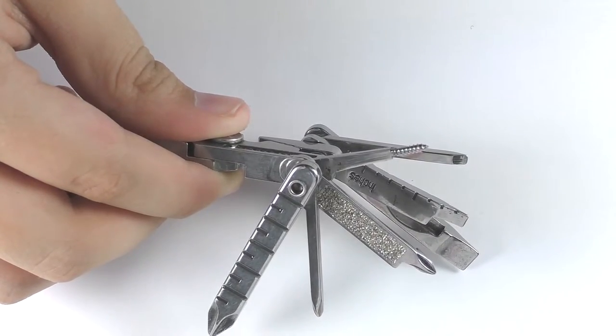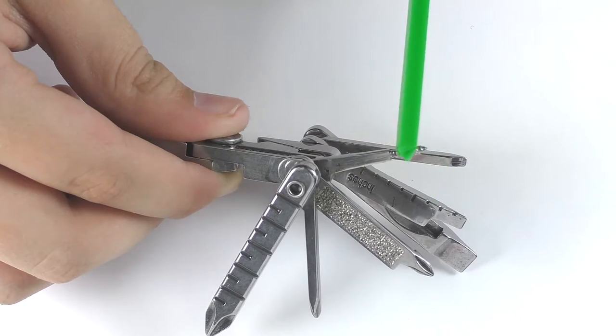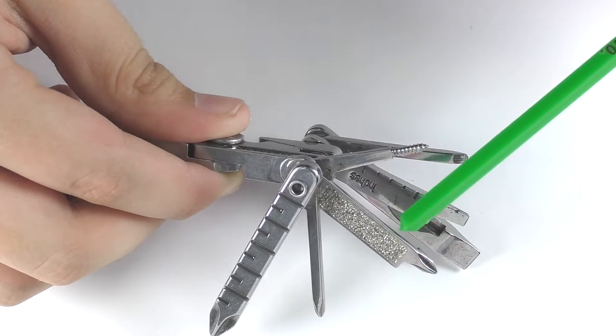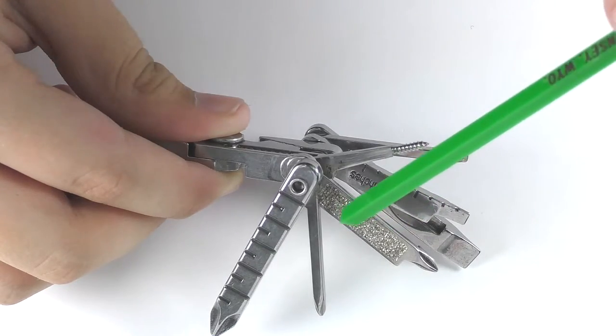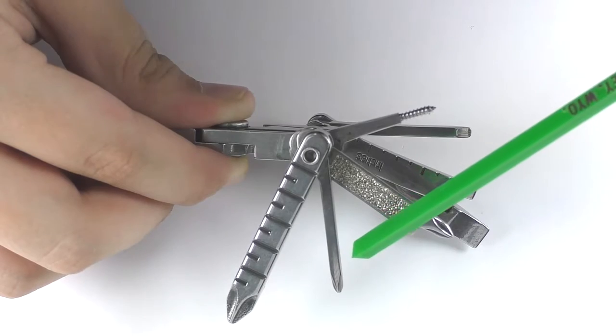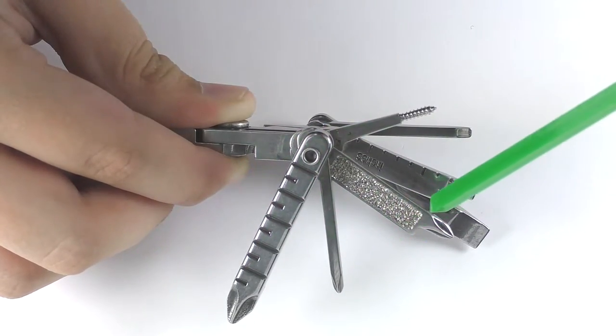Alright, so first off we have a small hand drill. And we have a medium-sized screwdriver and a nail file on the side. A small-sized screwdriver. And these three are all Phillips.